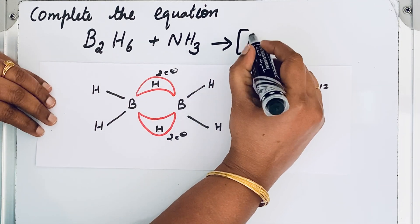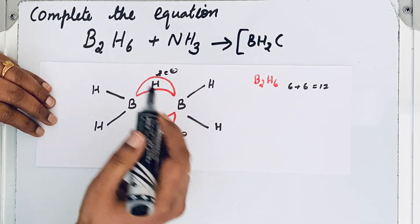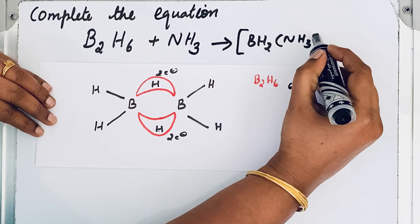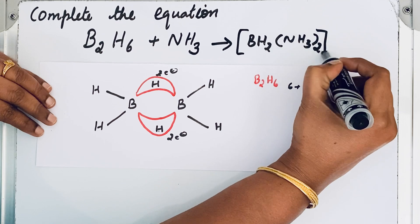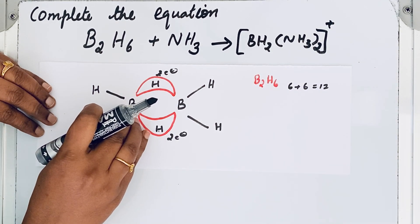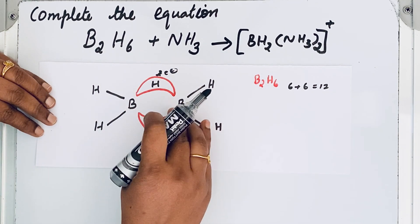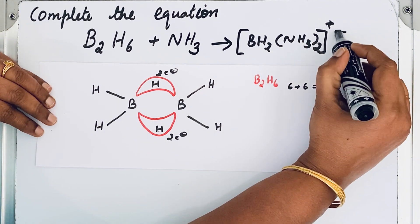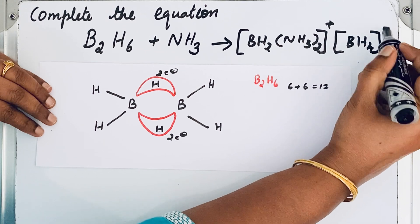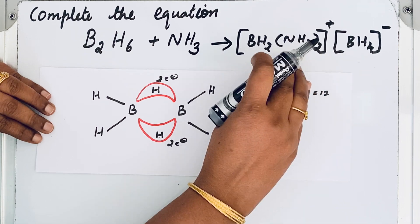We get a BH₂ unit, and two ammonia molecules come to attach here — two hydrogen atoms are removed from the bridge. This part becomes the positive ion because boron is now electron-deficient, while the BH₄ part, having taken the extra electrons, becomes BH₄⁻. This gives us the diammoniate salt [BH₂(NH₃)₂]⁺[BH₄]⁻.